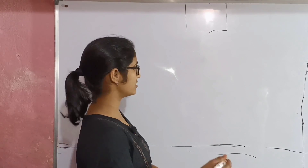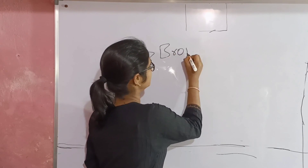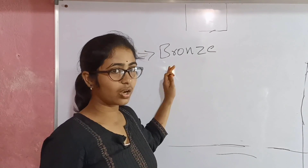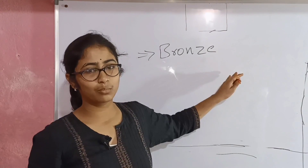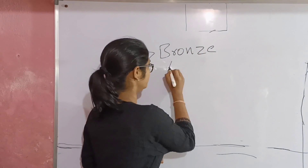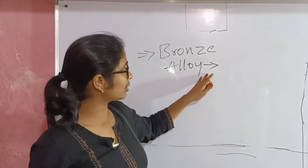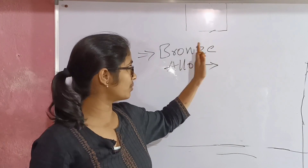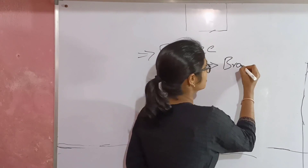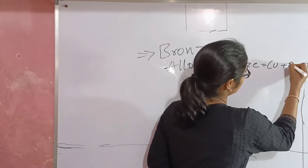Next is Bronze. Bronze is an alloy — and if it is an alloy, it is a combination of two or more metals. Bronze equals Copper plus Tin.